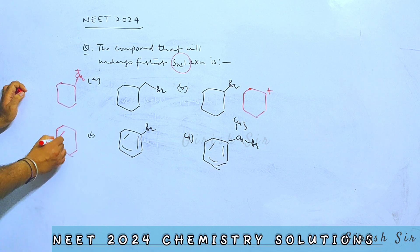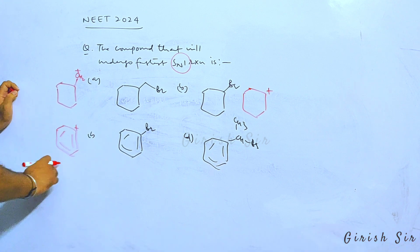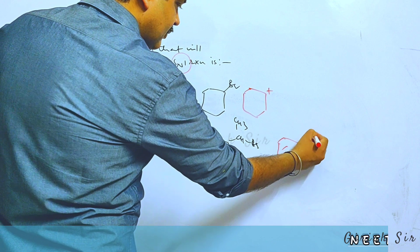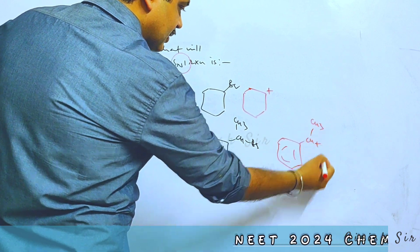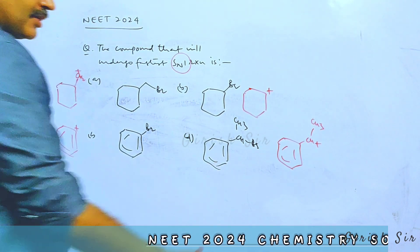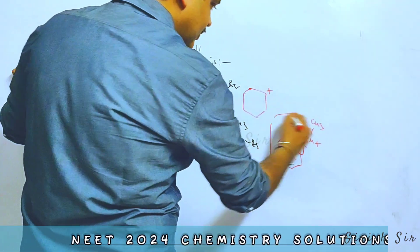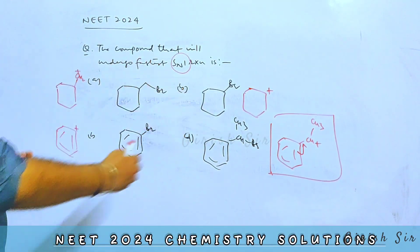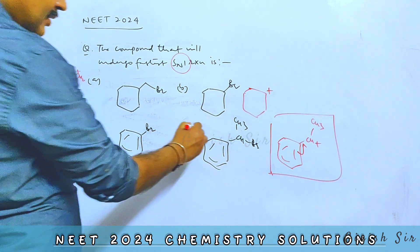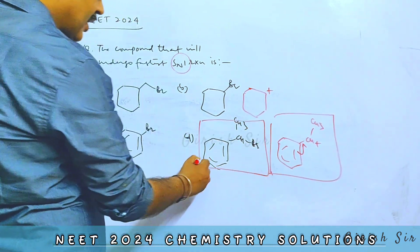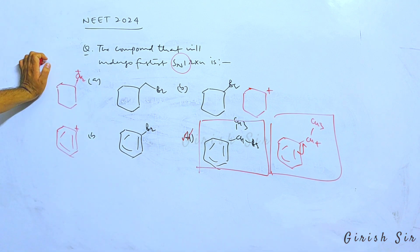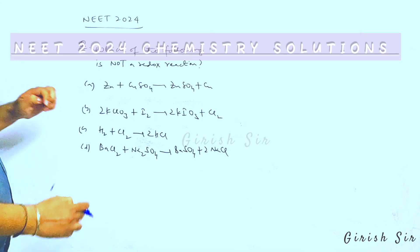Option C will form highly unstable aryl carbocation, while option D will form this 2-degree benzylic carbocation that is resonance-stabilized. Because of resonance stabilization, this carbocation is most stable compared to all other options. Hence, this compound will be most reactive towards SN1 reaction out of the given options.